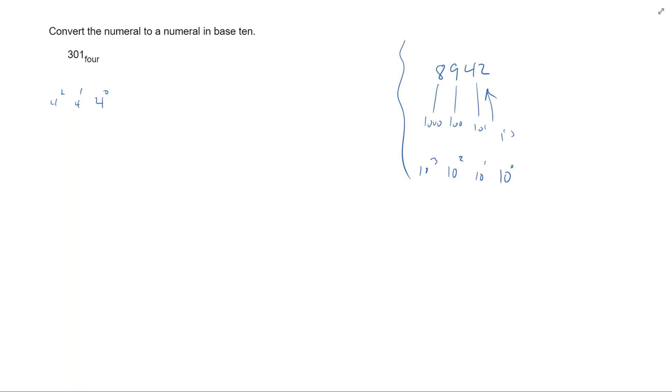All right, so let's go ahead and write this out. You want to make sure you've got each one in its spot. So 3 is going to be times 4 squared, and then we'll add it to the next spot. So we have 0 times 4 to the first, and then the last one, we have 1 times 4 to the 0 power.